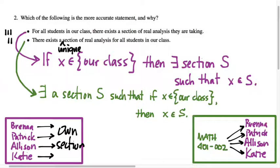Whereas in the first statement, when the there exists comes second, maybe I'll put a different clause in here. Maybe I'll put, like, their own. So in the first statement, all students in our class have potentially their own section of real analysis. Whereas in the second statement, there exists a unique one section of real analysis that you all have.